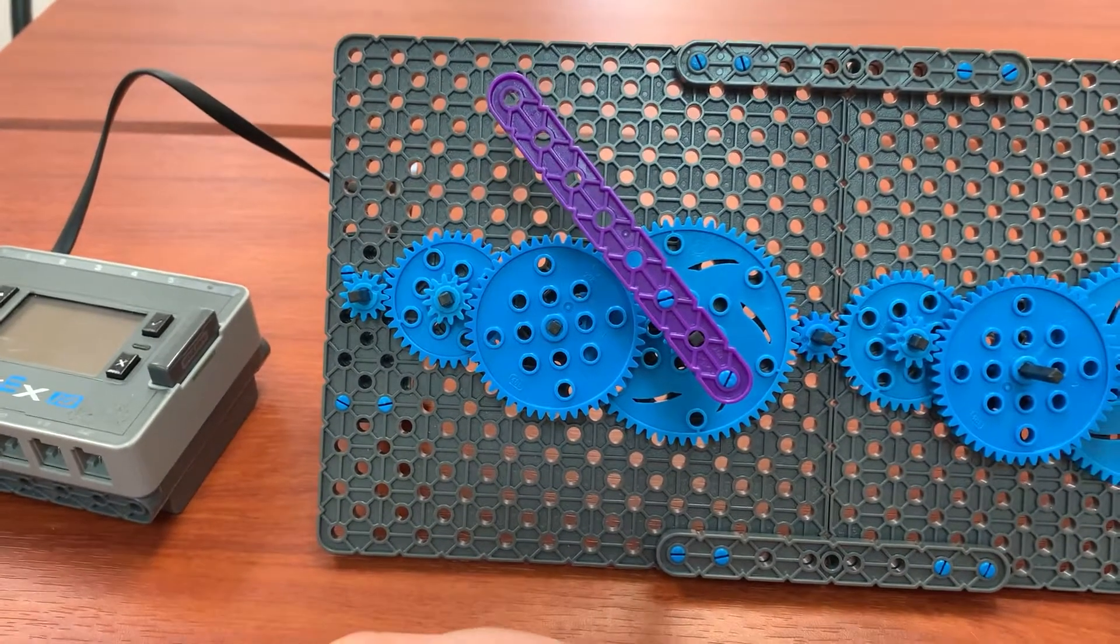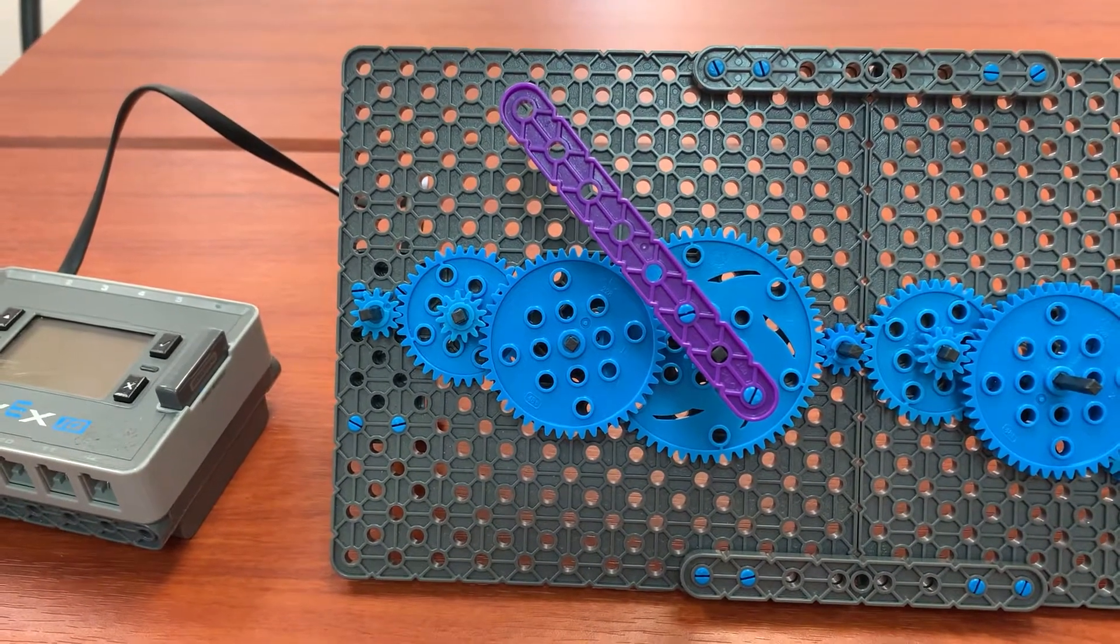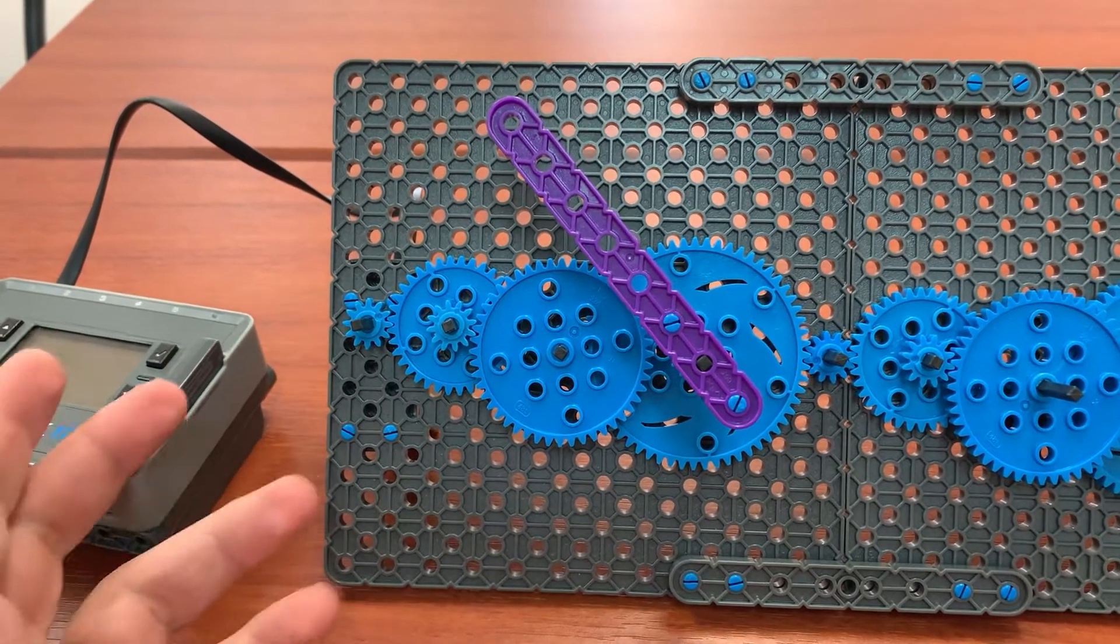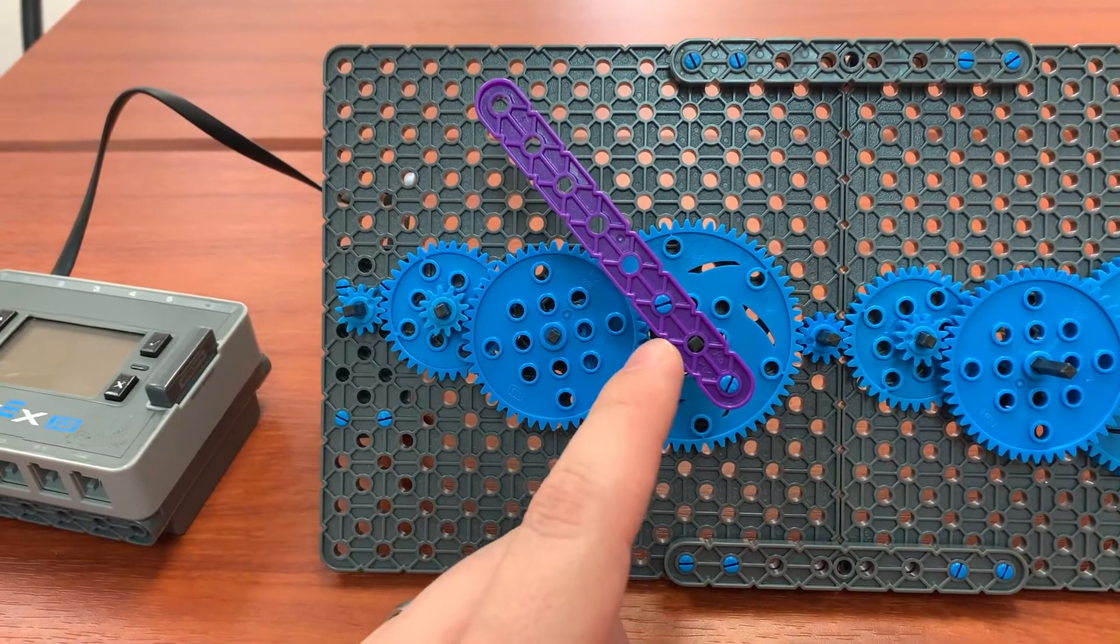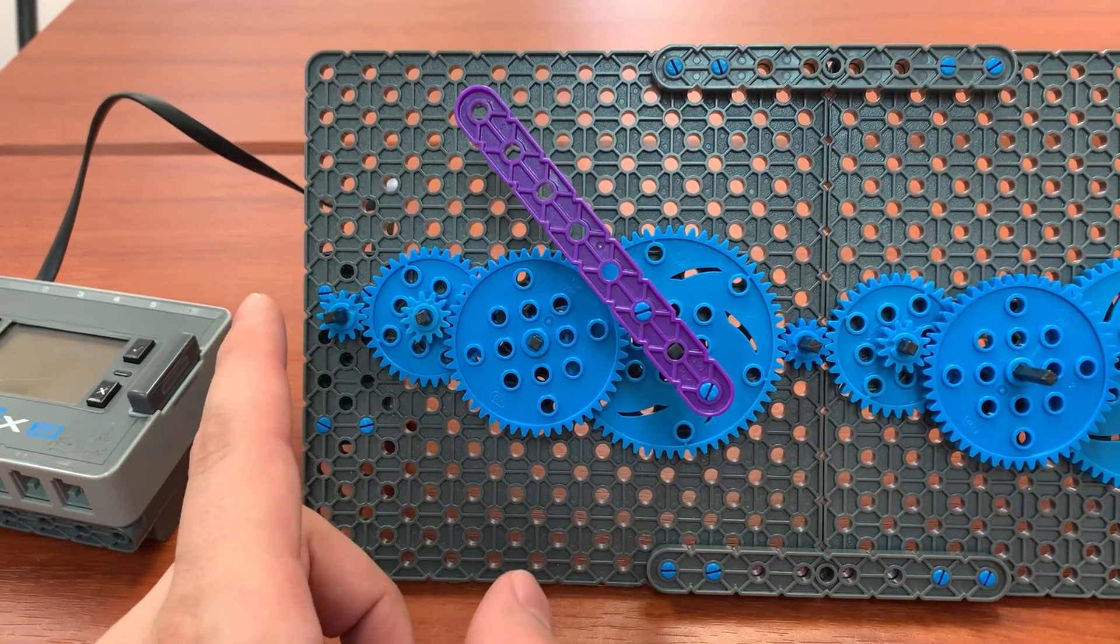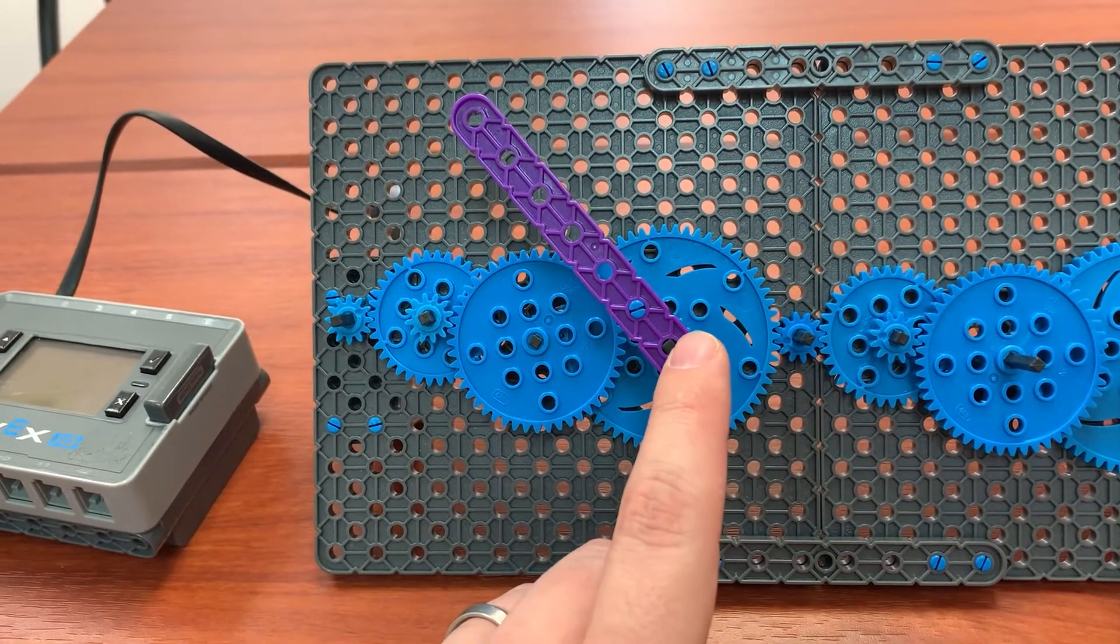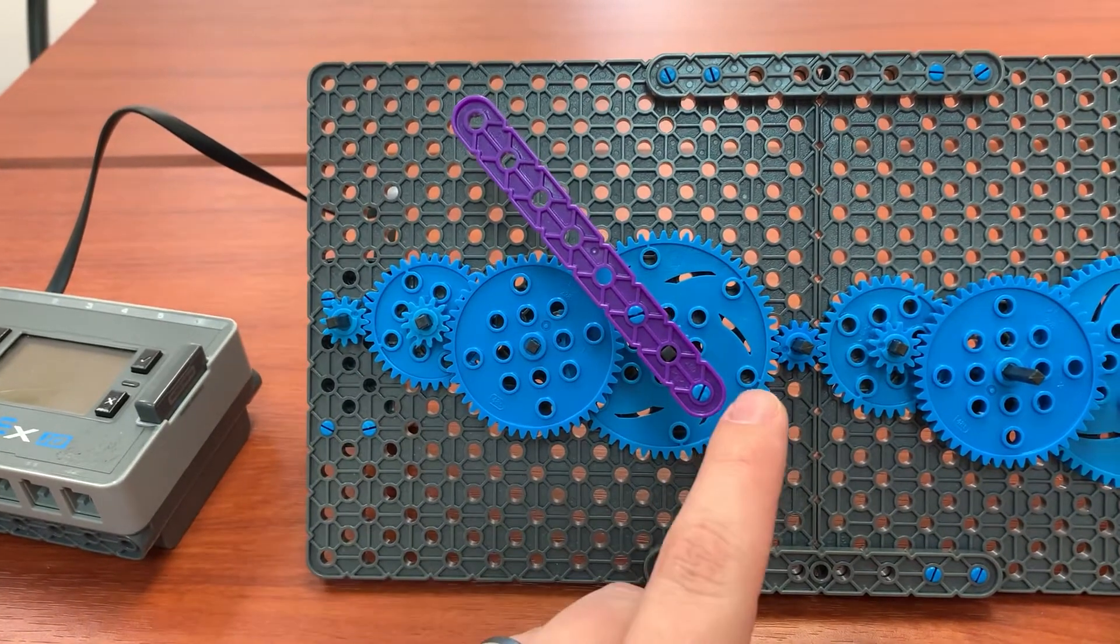So one of the kids pointed out that if you had a 60-to-1 gear ratio, that's essentially a clock. If the input gear is turning 60 times every time that the output gear is turning once, then this effectively becomes the second hand and this becomes the minute hand or the minute and the hour hand.